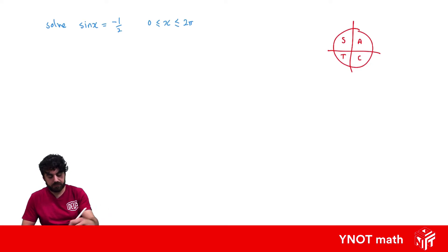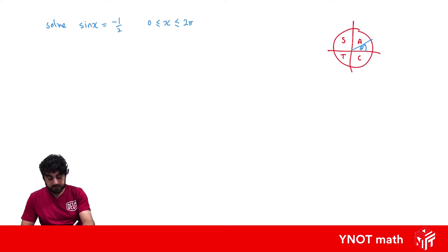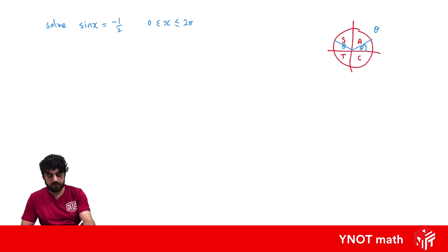If we have some base angle we're dealing with, theta, we can think of the first quadrant as our base angle theta, and we get an identical triangle in each other quadrant.